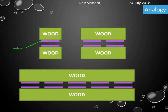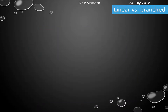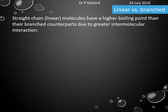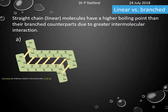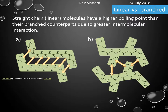We've also got the idea of linear versus branched alkanes. For the same number of carbon atoms, linear molecules have a higher boiling point than their branched counterparts. This is because linear molecules have lots of opportunities to interact, whereas branched molecules can't get as close to each other — they don't fit as nicely together. So they have less chance of interaction, therefore less overall intermolecular forces of attraction, and therefore a lower boiling point.